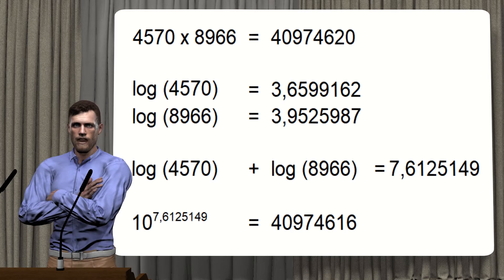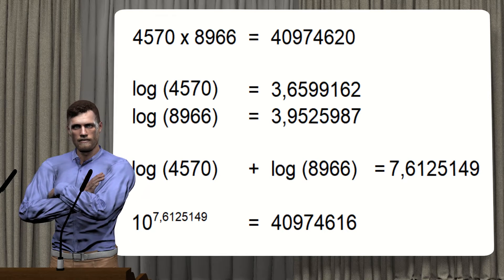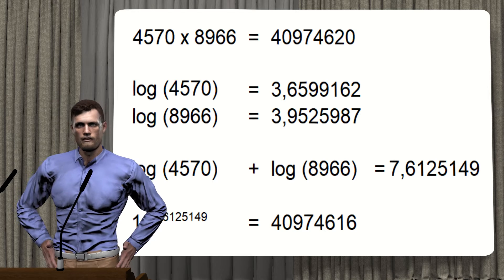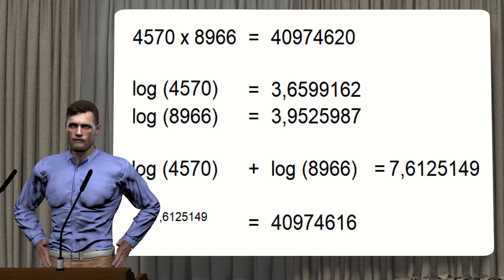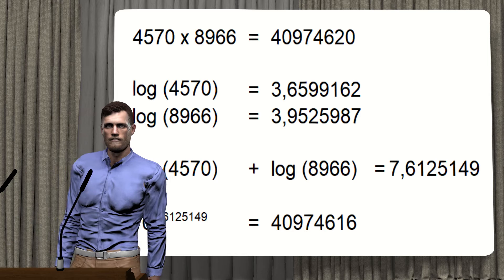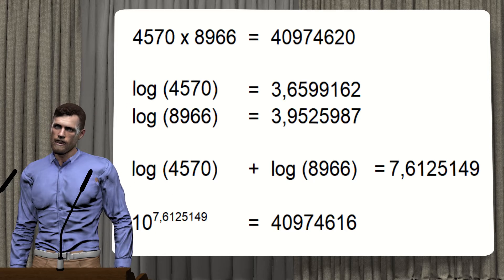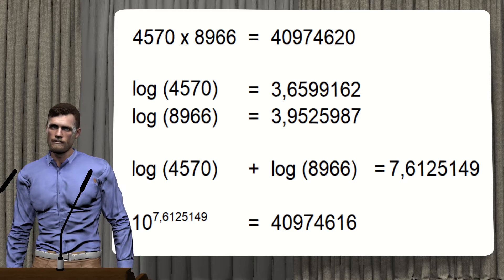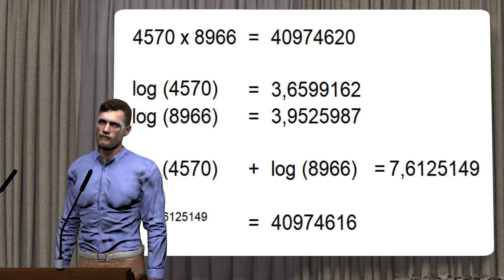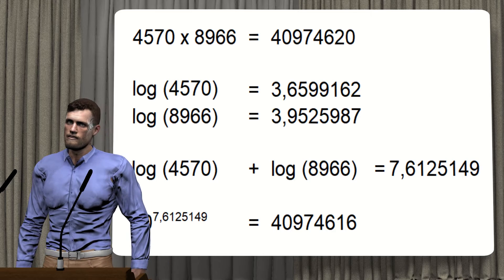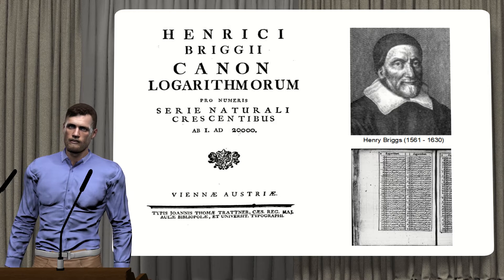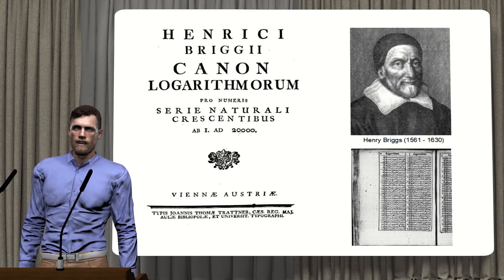Logarithms have another very interesting property. Suppose we want to multiply 4570 by 8966 without an electronic calculator — it would take most people some time to find that the result is 40,974,620. However, we can convert that multiplication into an addition. Using a table of logarithms, we find the logarithms of those two numbers, add them, and then use an anti-logarithm table to recover the result with very small error. Mathematicians of the 17th century discovered these properties and used them precisely to convert multiplications into sums, since they did not have electronic calculators.